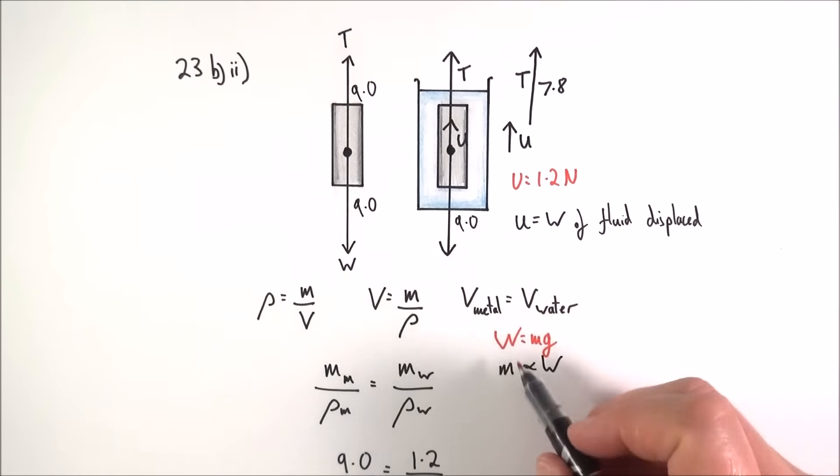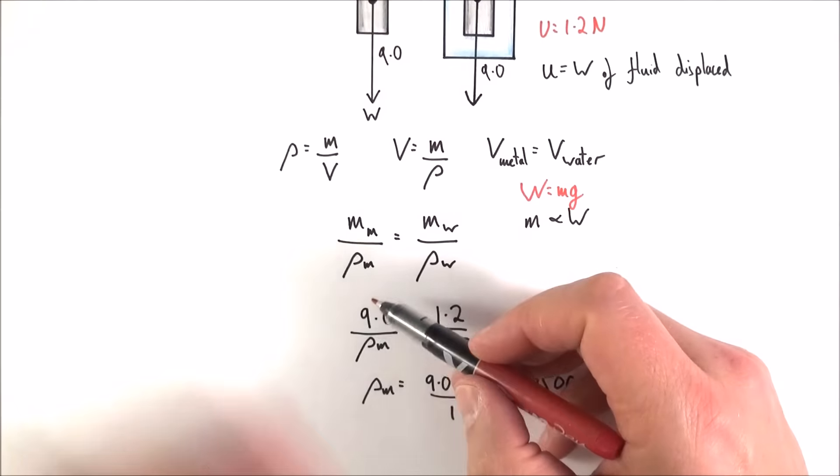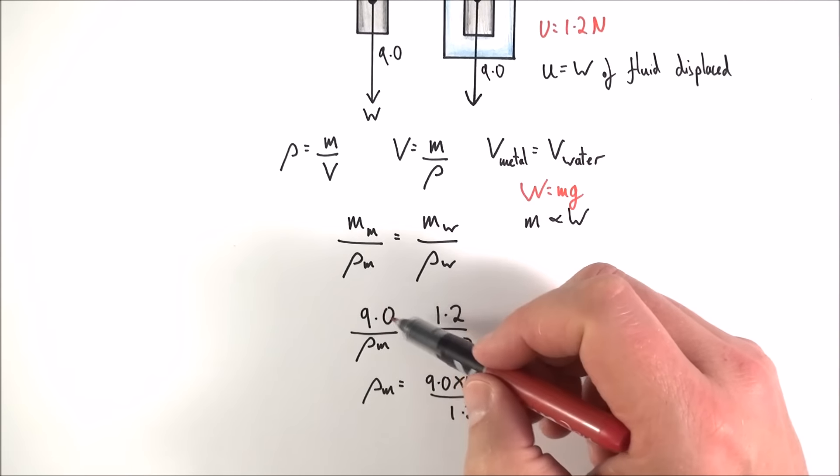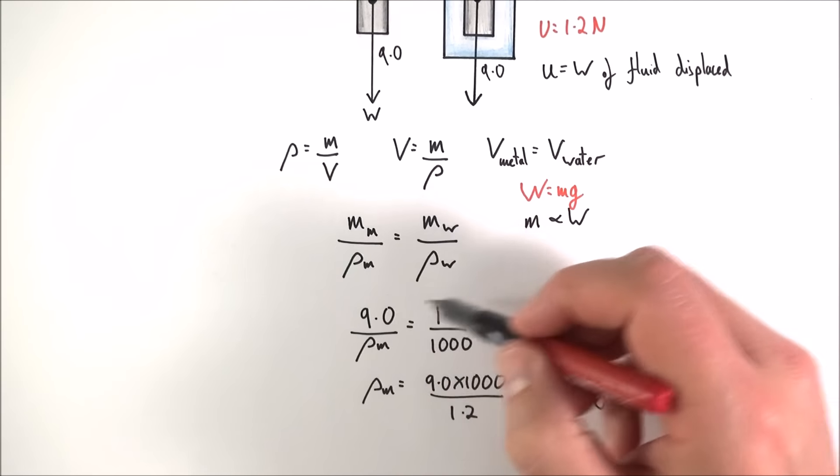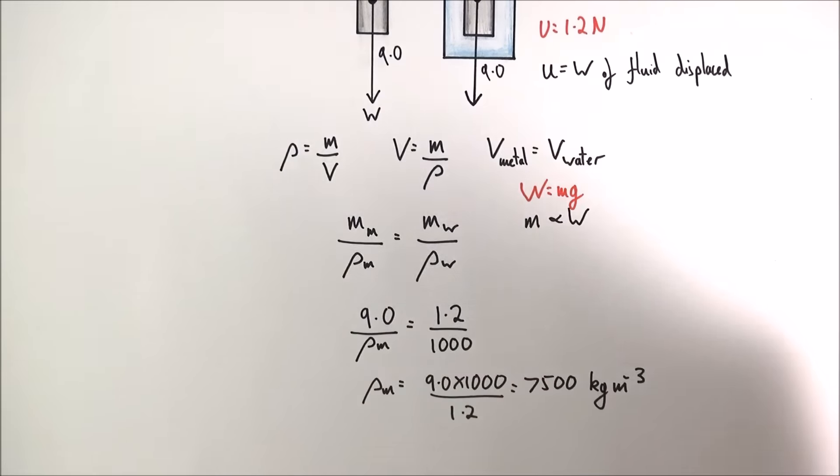What I then did was I put some numbers in and I could have worked out the mass of the metal and the mass of the water, I could divide it by 9.81, but I didn't really feel the need because that would have been divided again later in the equation. So I said that the mass of the metal or the weight of the metal of 9 newtons over the density of the metal is equal to the weight of the water over the density of the water.